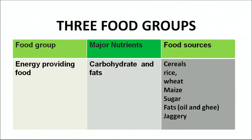Let us see the three food groups in this table. The first group covers energy-providing foods, whose major nutrients are carbohydrates and fats. Food sources include cereals, rice, wheat, maize, sugar, fats, oils, ghee and jaggery — all energy-providing foods in our diet.